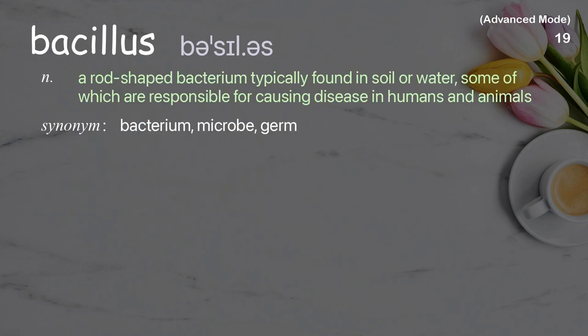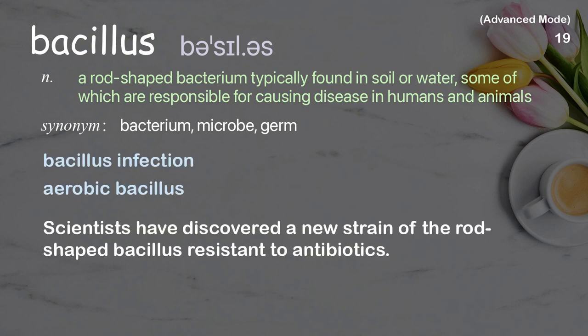Bacillus: a rod-shaped bacterium, typically found in soil or water, some of which are responsible for causing disease in humans and animals. Examples: bacillus infection. Aerobic bacillus. Scientists have discovered a new strain of the rod-shaped bacillus resistant to antibiotics.